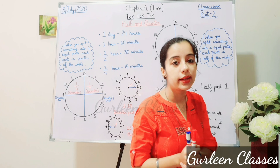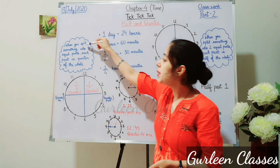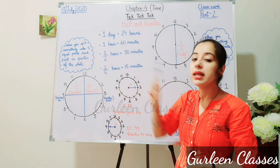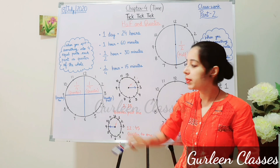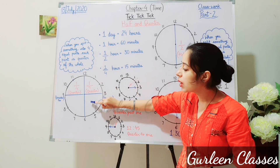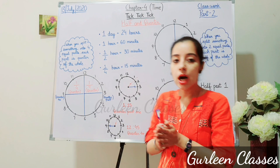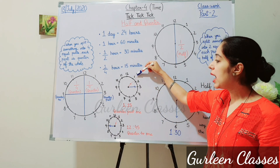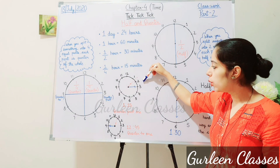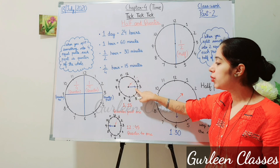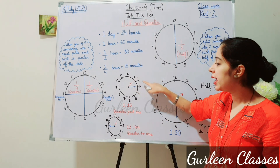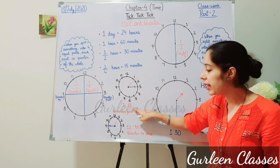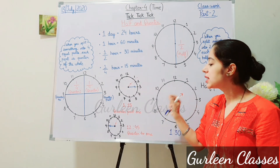Now let's see what is quarter. When you split something into four equal parts, each part is a quarter of the whole. Here you can see the clock. The hour hand is between 1 and 2, and the minute hand is pointing to 3, which means 15 minutes — 5, 10, 15. So the time is 1 hour 15 minutes, and we say this as 'quarter past 1.'